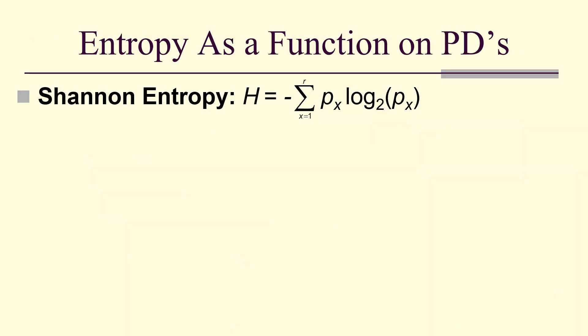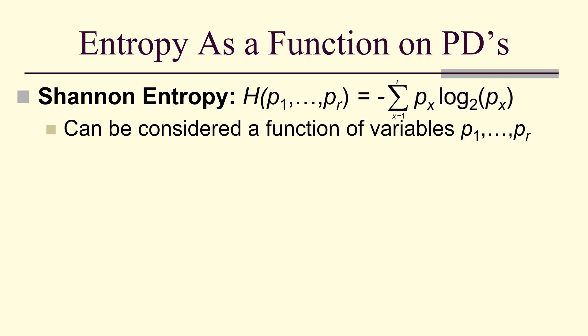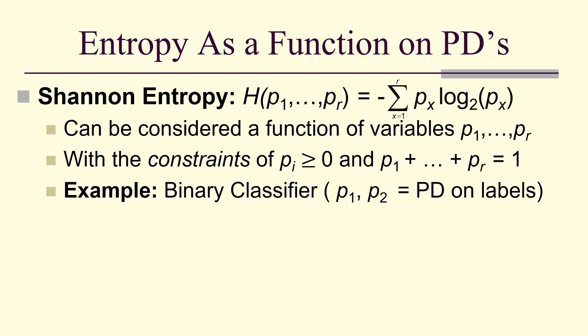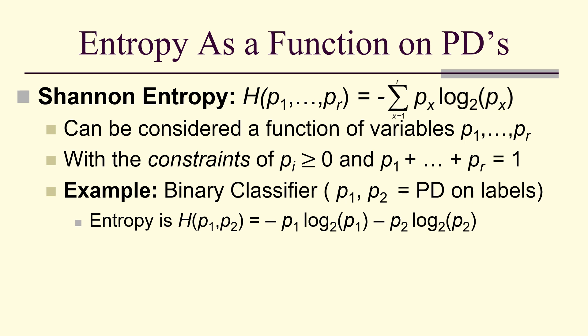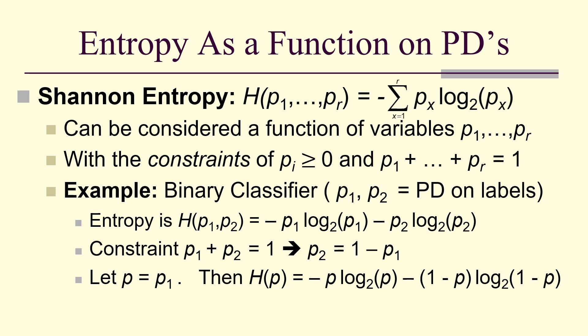Entropy can be thought of as a function on probability distributions. Here's Shannon entropy — a function of variables p1 to pr with the constraints that the p's are non-negative and sum to 1. For example, a binary classifier has p1 and p2, and the entropy is h of p1 and p2, which is negative p1 log base 2 of p1 minus p2 log base 2 of p2. Since p1 plus p2 equals 1, we relabel p1 as p, giving h of p equals negative p log base 2 of p minus (1 minus p) log base 2 of (1 minus p).